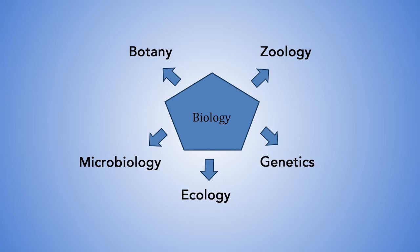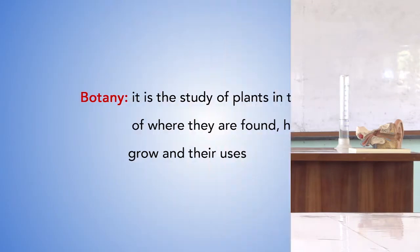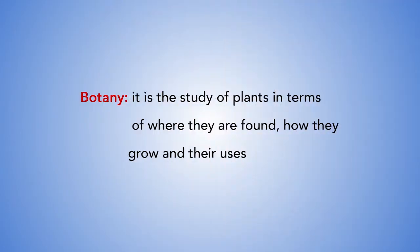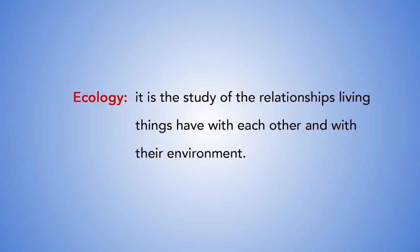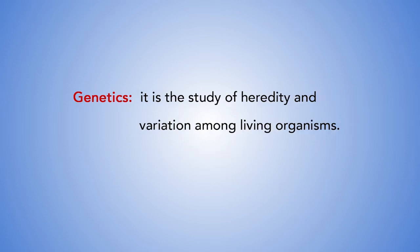Now let us quickly explain these sub-branches of biology, starting off with botany. It is the study of plants in terms of where they are found, how they grow and their uses. Zoology is the study of animals in terms of where they are found, their structure and their mode of lives. Ecology is the study of the relationship between living things and their environment. Genetics is the study of heredity and variation among living organisms.